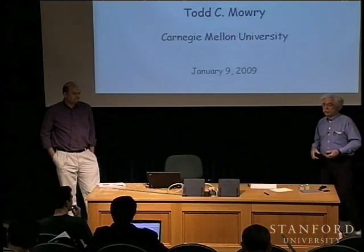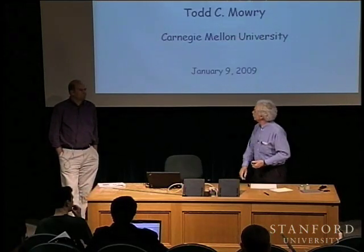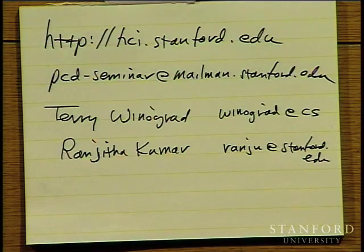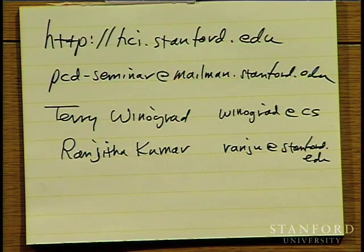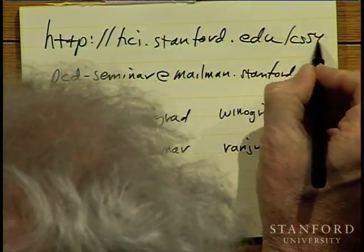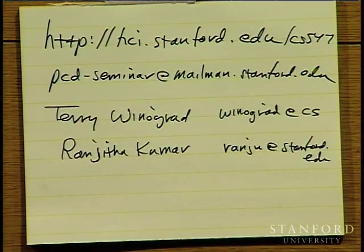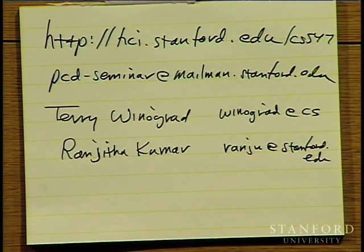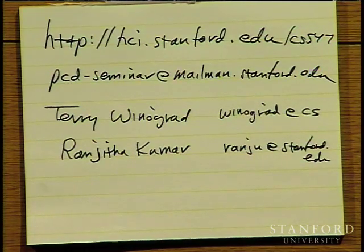Let me just do a few administrative things quickly since it's the beginning of the quarter. There is a website for this course — the short version is CS547. It's on the HCI website at CS547. You will find there, among other things, all the abstracts for the talks coming up, so you can read the details on all the talks. We have one abstract still to be filled in for later in the quarter, but the rest are all filled in.